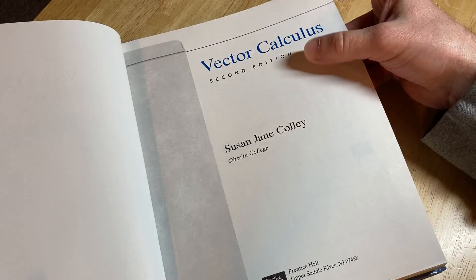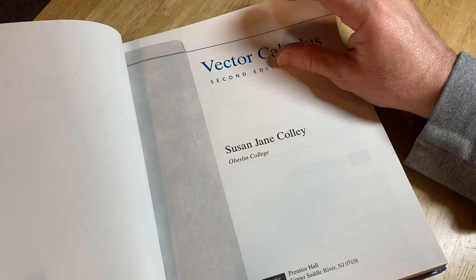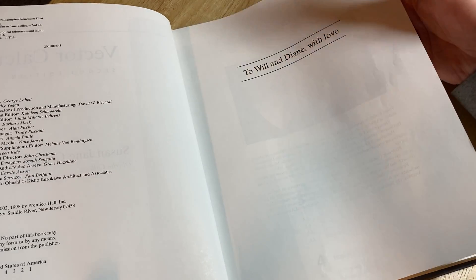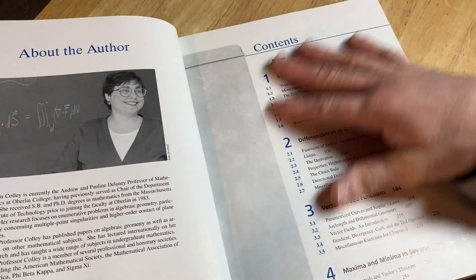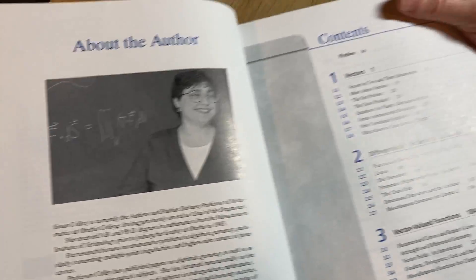This is probably not the newest edition. This is the second edition. I'll leave a link in the description, but you can probably get used copies. So 2002 is the copyright, and there's the author, Susan Coley. Cool, right?